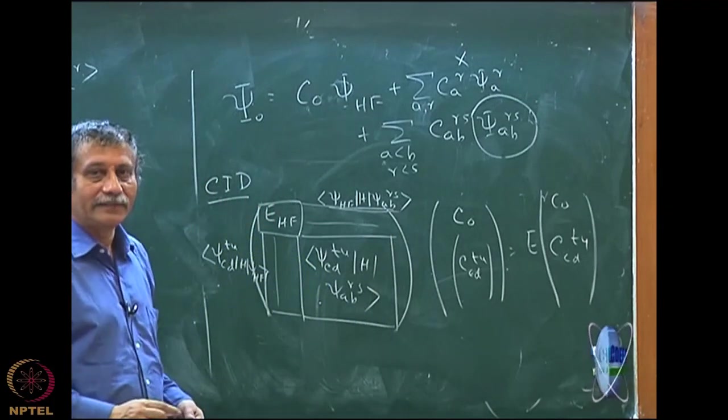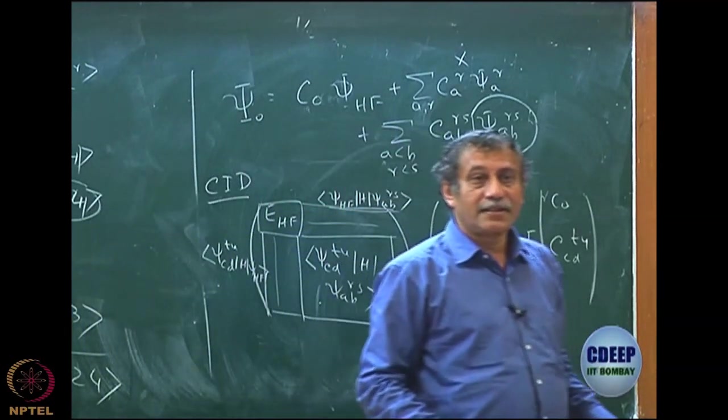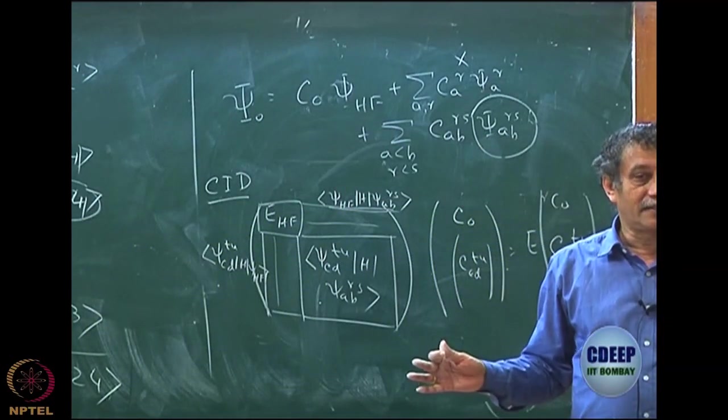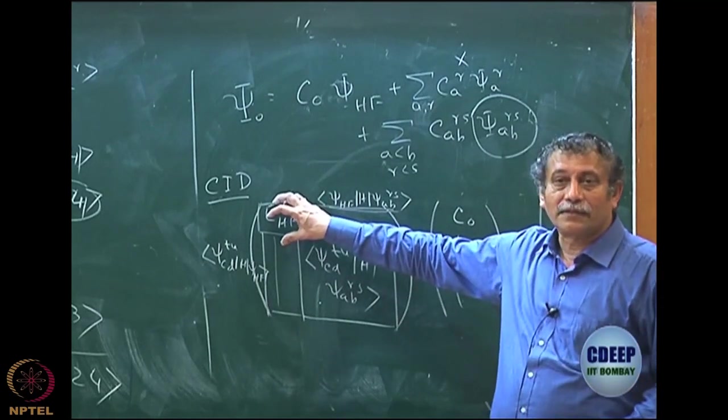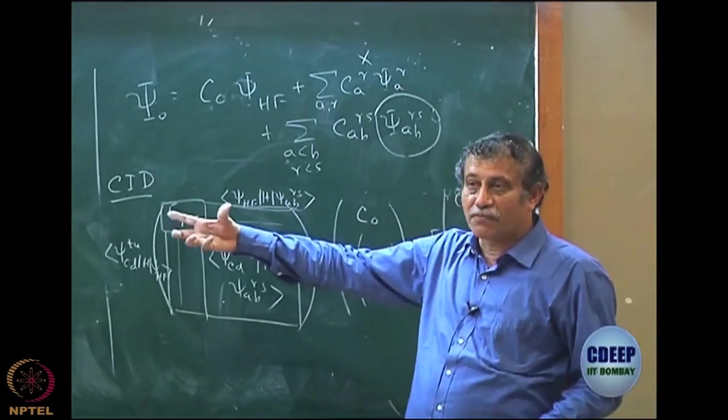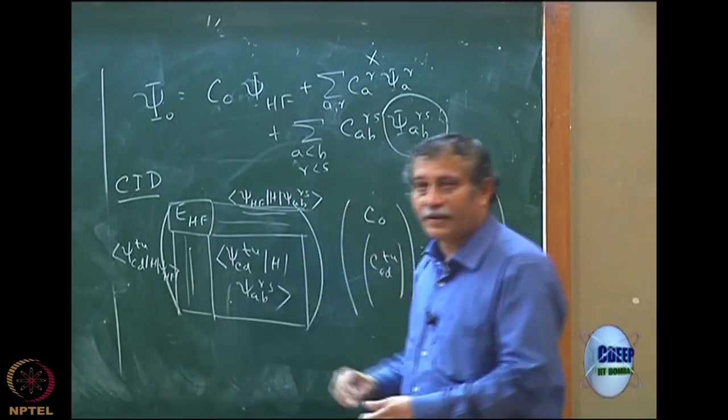This is a completely coupled matrix and you have to now diagonalize this. For the first time, the ground state will no longer be E Hartree-Fock. Ground state will now change because of the coupling terms here.